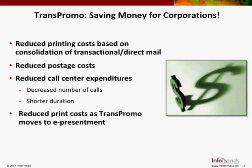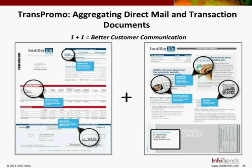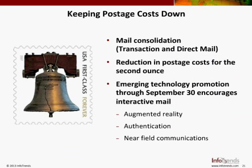What you want to be able to do is work in the realm of TransPromo — aggregate retention-oriented direct mail with transaction documents. It offers tremendous cost savings in print costs and postage. You can take that one statement, add marketing messaging, and get a much more cost-effective customer communications document. Consolidating mail reduces postal costs. The USPS has continued their second-ounce rides-free promotion in 2013, meaning pre-sorted, first-class letter-sized mail pieces weighing under two ounces will continue to be charged at the under-one-ounce rate.